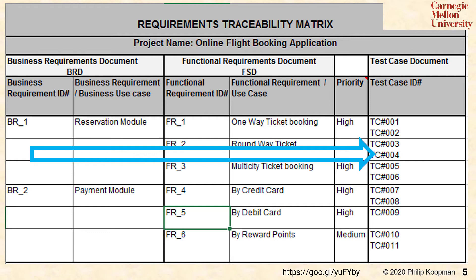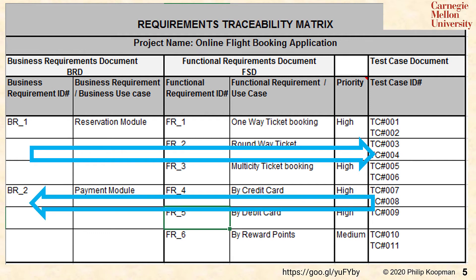You can also use this table in reverse — look up a test case and ask why it exists; it ought to trace back to requirements. You can find traceability problems by checking whether a business requirement has no functional requirements or no test case, which is a problem. Or if a test case has no corresponding functional requirement, and that functional requirement has no corresponding business requirement — that's also a problem.